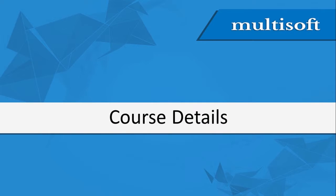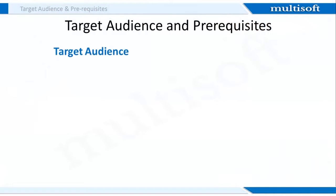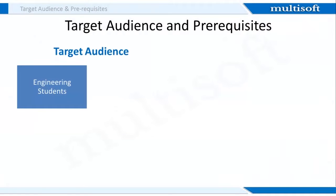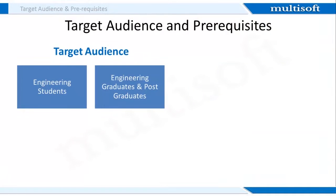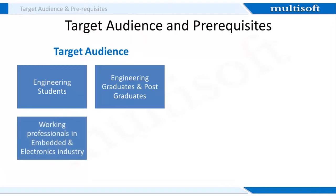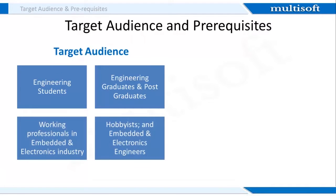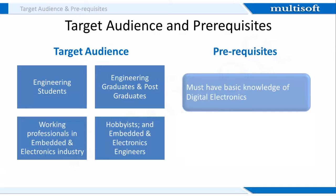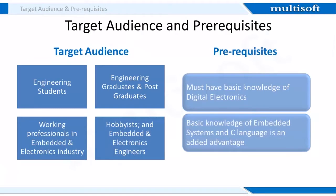Let's now discuss the course details. The ideal audience for this course includes engineering students, engineering graduates and post-graduates, working professionals in the embedded and electronics industry, and hobbyists and embedded electronics engineers. Talking about the prerequisites, participants must have basic knowledge of digital electronics. Basic knowledge about embedded systems and C language is an added advantage.